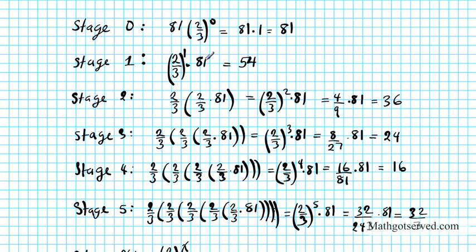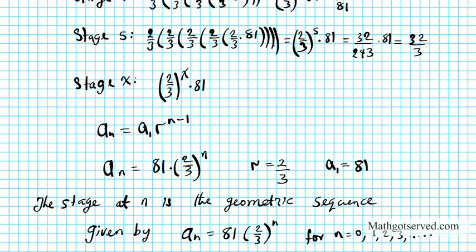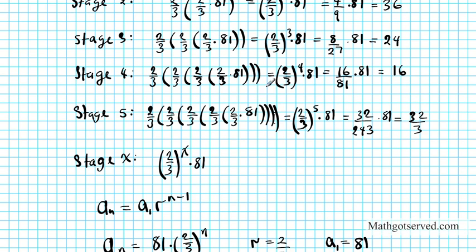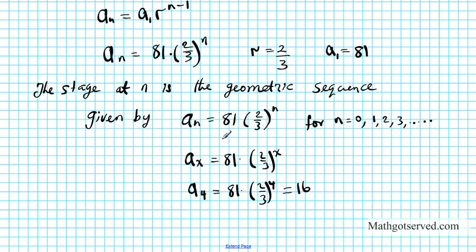You don't go back and just multiply by 81 separately. This geometric sequence formula can tell us the length of any stage of the counter set. For stage x, the result is a_x = 81 times (2/3)^x. You can verify: for stage 4, that's 81 times (2/3)⁴, which gives exactly 16 — matching our earlier work. That's the cool connection between the counter set and the geometric sequence.